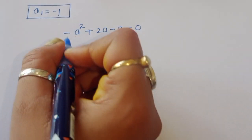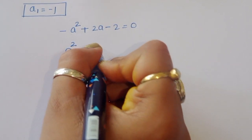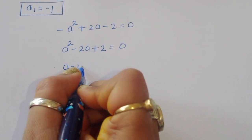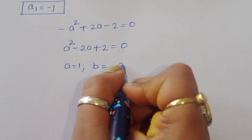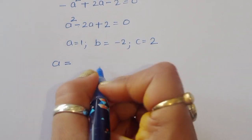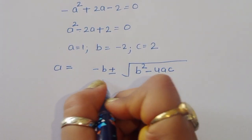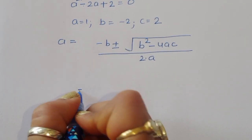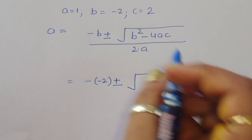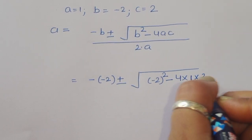Multiplying the second equation by minus 1 gives a squared minus 2a plus 2 = 0. Here the coefficient of a squared is a = 1, b = minus 2, and c = 2. Using the quadratic formula: a is equal to minus b plus or minus square root of b squared minus 4ac, all divided by 2a.